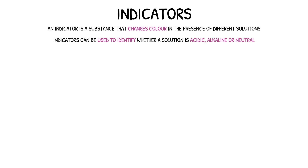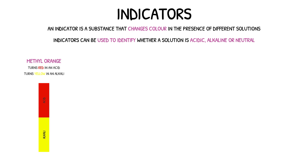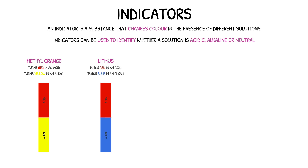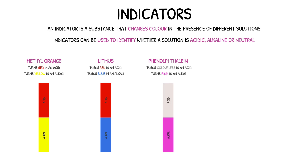For example, methyl orange is an indicator that turns red in the presence of an acid and yellow in the presence of an alkali. Litmus is also an indicator that turns red in the presence of an acid but will turn blue in the presence of an alkali. Phenolphthalein is an indicator that is colourless in the presence of an acid and pink in the presence of an alkali.